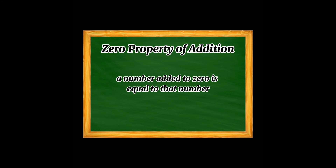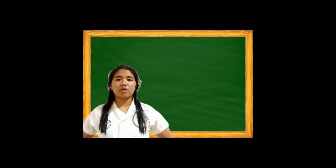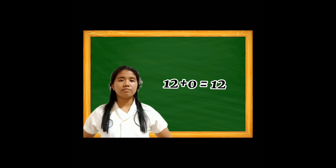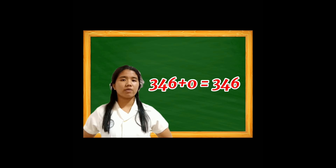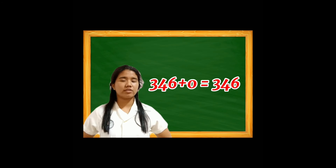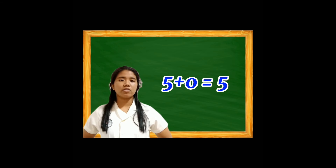Zero property of addition: a number added to 0 is equal to that number. Kahit ano ang i-add natin sa number 0, hindi pa rin ito mababago. Tulad ng 12 plus 0 equals 12, 346 plus 0 equals 346, 5 plus 0 equals 5.